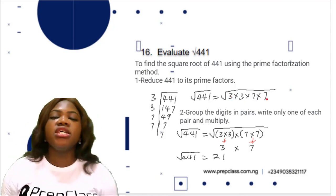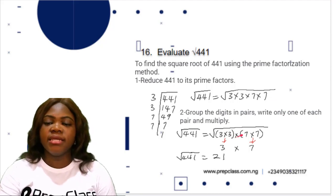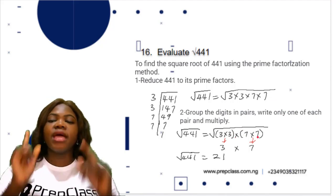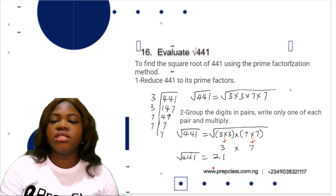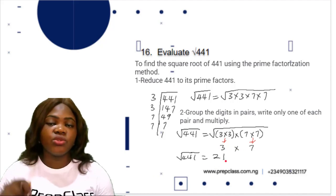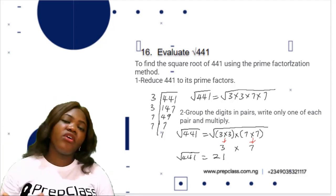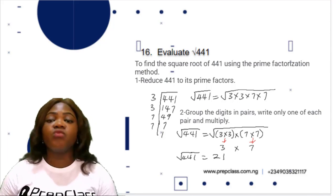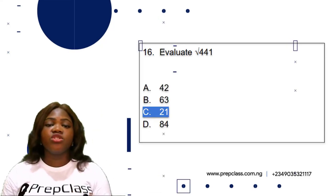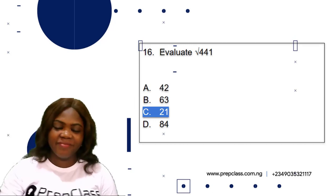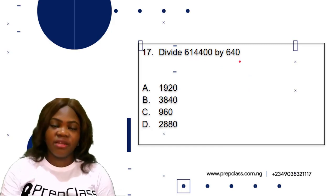Step 2 is to group the digits in pairs, write only one of each pair, and multiply. We pair 3×3 and 7×7, then write one from each pair: 3 and 7. So 3 multiplied by 7 is 21, meaning the square root of 441 is 21. To verify, multiply 21 by itself and you get 441. The correct option is option C: 21. Now question 17: divide 614,400 by 640.